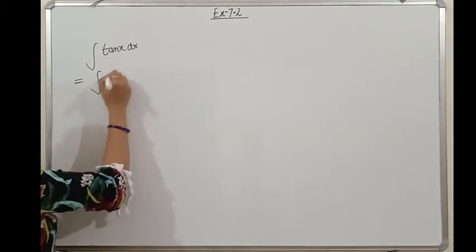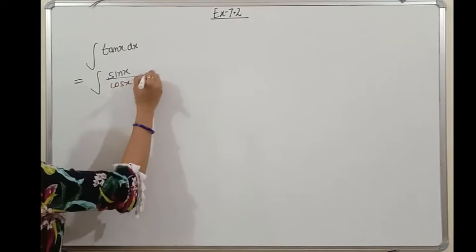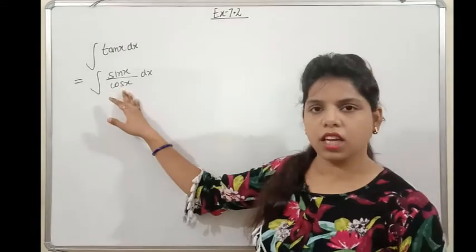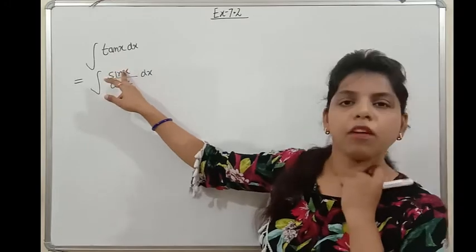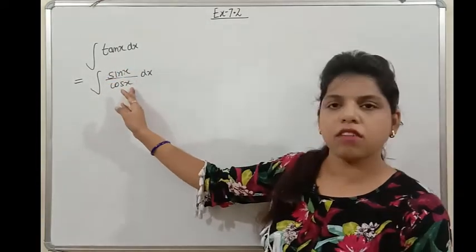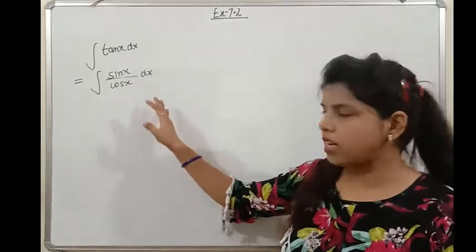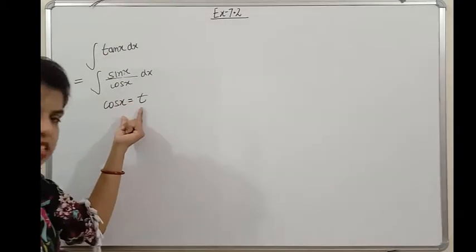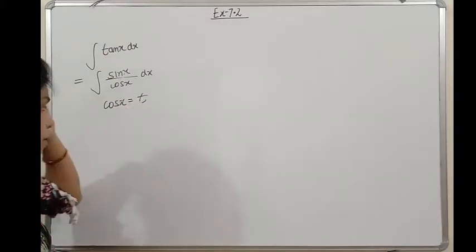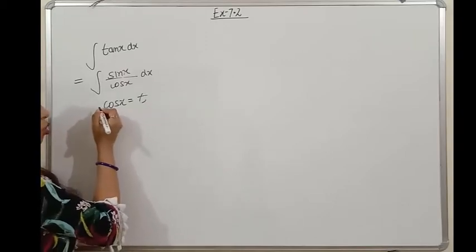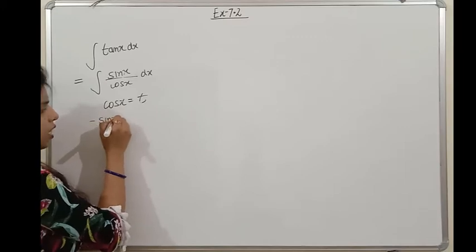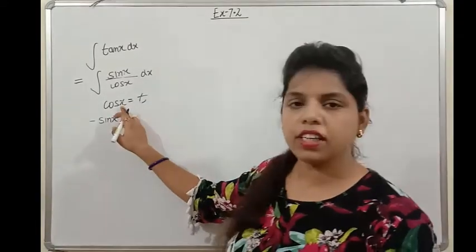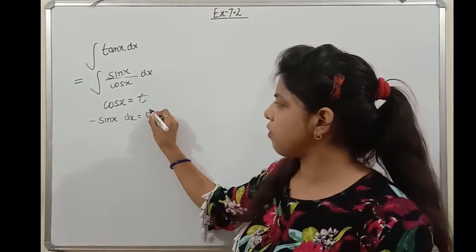Let's find the integration of tan x. We know tan x = sin x / cos x. We assume cos x = t and differentiate both sides. The derivative of cos x is −sin x, and dx differentiates to dt, giving us −sin x dx = dt.